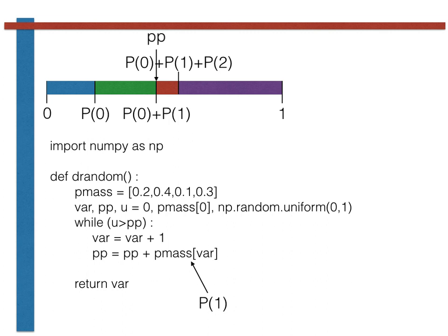We increment VAR by one further time and shift PP by adding P2. When we run the test in the while loop, we are thus testing whether or not we are in the red segment of the line. If u is in this segment, the program finishes and a value of 2 is returned. If by contrast we are not in this segment, we must then be in the purple segment so the function will eventually return 3 after running through the while loop one final time.